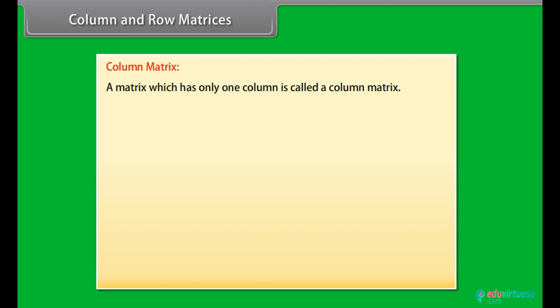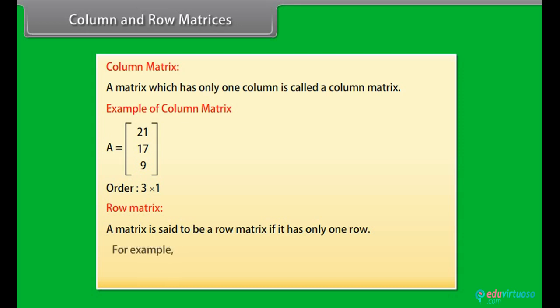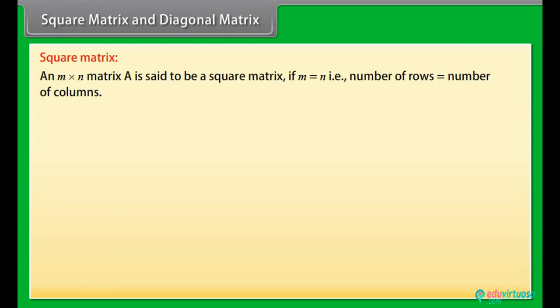Column matrix: A matrix which has only one column is called a column matrix. For example, matrix A with entries 21, 17, 9 has three rows but only one column, so it is a column matrix of order 3 by 1. Row matrix: A matrix is said to be a row matrix if it has only one row. For example, [3, 5, 5, 1] is a row matrix.